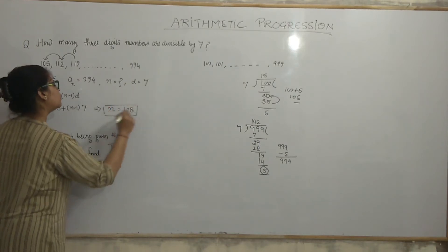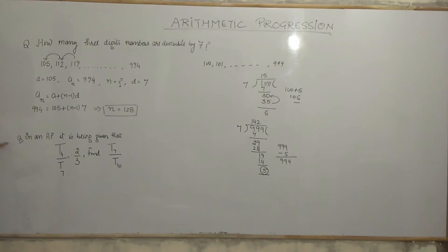Actually, you have highlighted the variable which is missing. a_n is equal to a plus (n minus 1) into d. a_n is equal to 994, 105 plus (n minus 1) into 7. On solving, you can solve. You get n is equal to 128. Not wasting too much time. I know that you can do calculation.